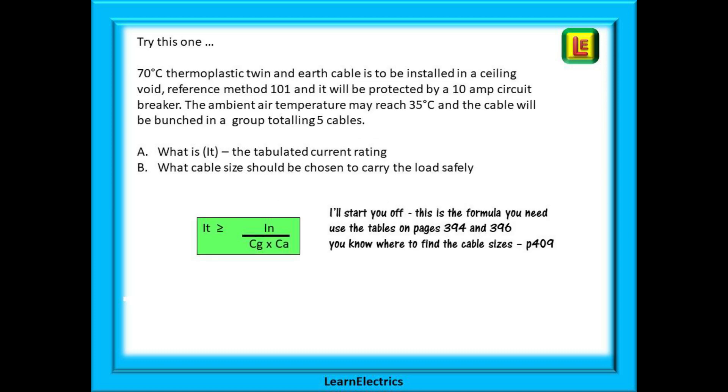Now try this one. 70 degree thermoplastic twin in earth cable is to be installed in a ceiling void using reference method 101. And it will be protected by a 10 amp circuit breaker. The ambient air temperature may reach 35 degrees centigrade. And the cable will be bunched in a group totalling 5 cables. What is IT? The tabulated current rating. And what cable size should be chosen to carry the load safely. This is the formula that you need. Use the tables on page 394 and 396. Once you have a current size you know where to find the cable sizes on page 409. Pause the video whilst you work it out.